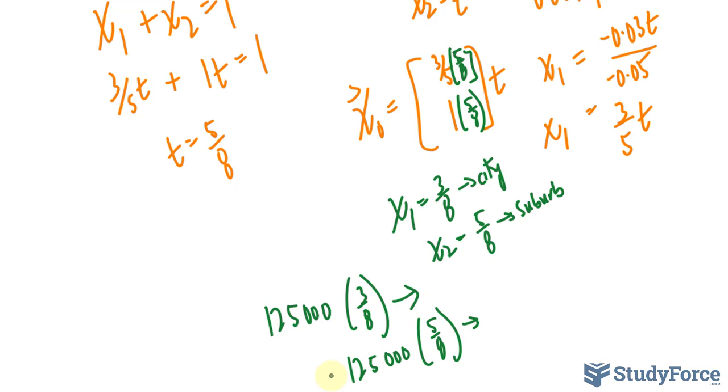125,000 times 3 over 8, that's the city population, and this is the suburb population. And so there you have it, an application involving Markov chains.